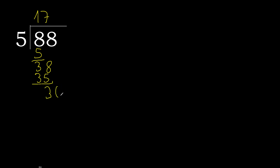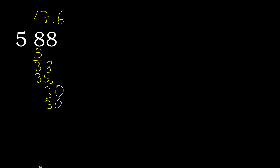There is no next number, therefore complete. Always complete with 0 here, with a point. 30. 5 multiplied by 6 is 30. 30 minus 30 is 0. 0, therefore finish it.